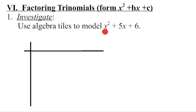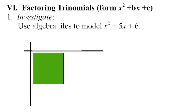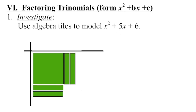We're going to begin with our squared piece and tuck it in the corner. Then we know we have five x's — those are the rectangles — and because this is a positive five, they're going to be the green rectangles. So we're going to put one along that side, one along that side, one along that side, one along that side, and keep building until we have all five. Then we have six little ones that we'll take and fill in the bottom in order to create that rectangle.